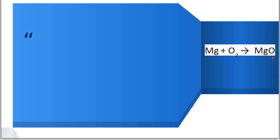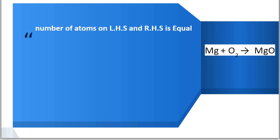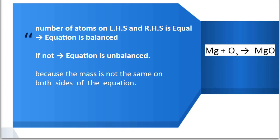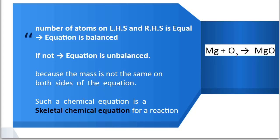Is the number of atoms of each element the same on both sides? If yes, then the equation is balanced. If not, then the equation is unbalanced, because the mass is not the same on both sides of the equation, and such a chemical equation is called a skeletal chemical equation for a reaction.